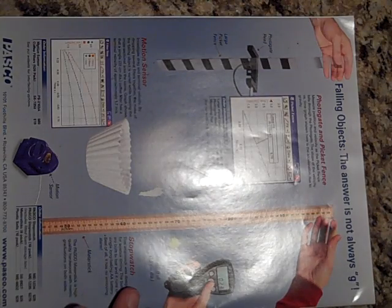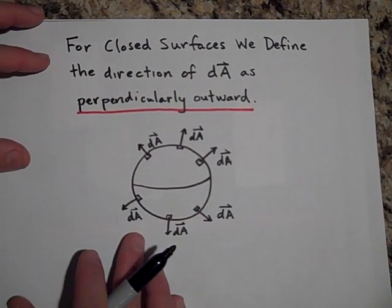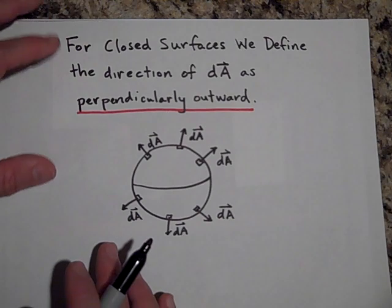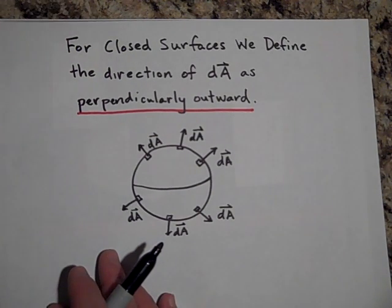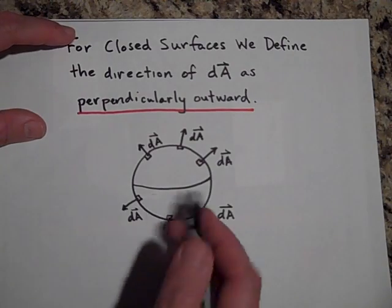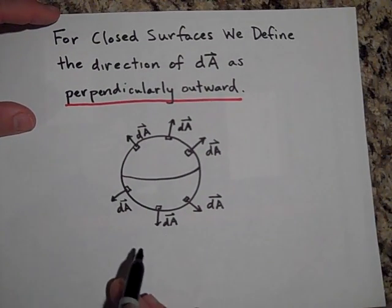Okay, moving right along then. For a closed surface, this is a little bit more interesting. For a closed surface, we define the direction of dA as being perpendicularly outward. So now it's not one way or the other—dA for a closed surface will always be perpendicularly outward.